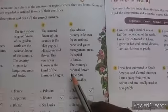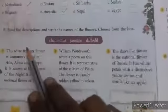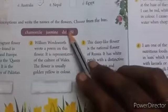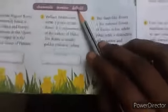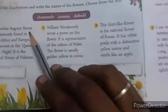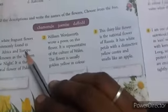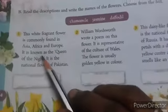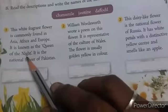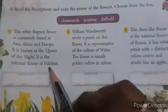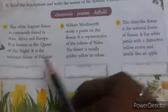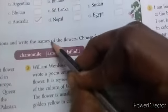These all represent the flowers which represent the culture and the countries of the regions where they are found. Sub-section B: read the description and write the names of the flowers, choose from the box. The white fragrant flower is commonly found in Asia, Africa, and Europe. It is known as the Queen of the Night and is the national flower of Pakistan. The answer is Jasmine.